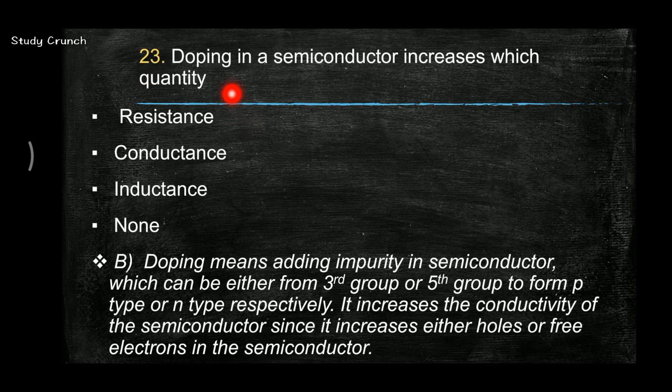Next, doping in a semiconductor increases which quantity? The answer is it increases the conductance. Doping means adding impurity in a semiconductor, which can be either from the third group or the fifth group to form P type and N type respectively. It increases the conductivity of the semiconductor since it increases either holes or free electrons in the semiconductor. So the answer is B, conductance is increased with doping.